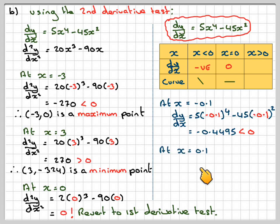At x equals 0.1, just greater than 0, dy/dx will be 5 times 0.1 to the power of 4 minus 45 times 0.1 squared, which gives minus 0.4495 again, which is negative. This goes negative, horizontal, negative. So that's not a maximum or minimum. This is what's known as a point of inflection.